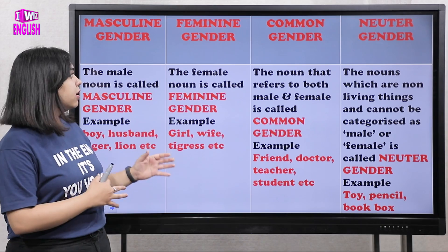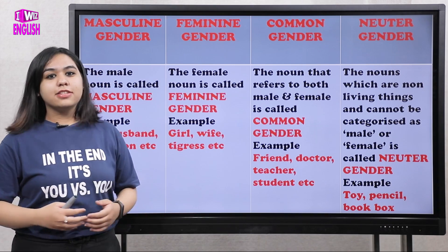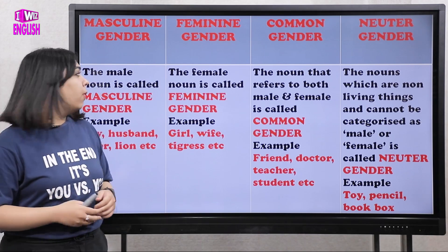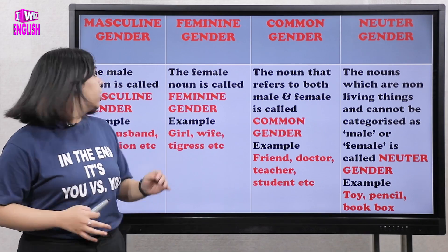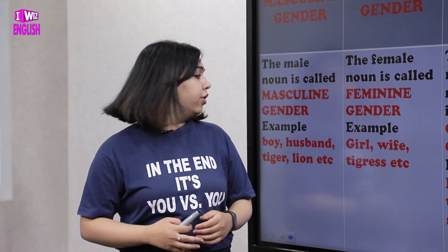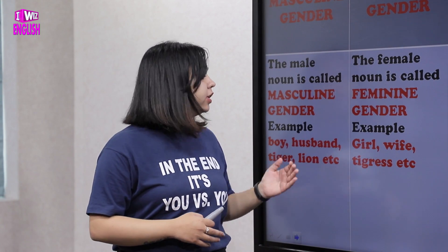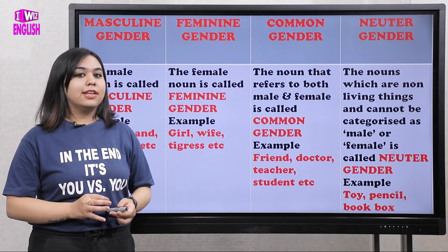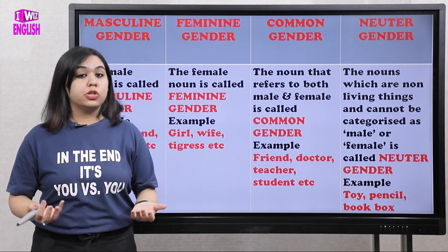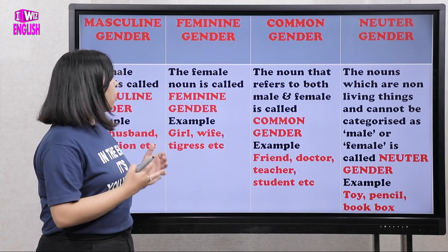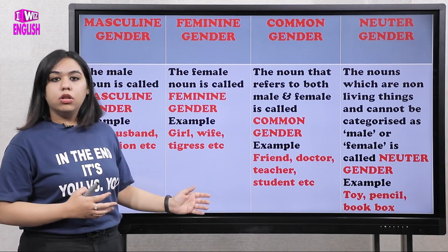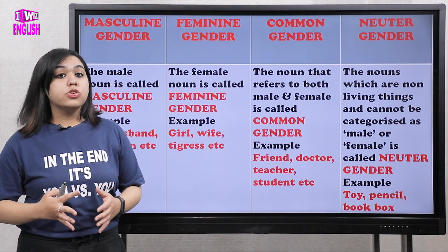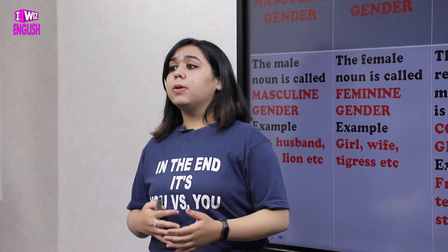Here is a helpful table. Masculine gender refers to the male noun — for example, boy, husband, tiger, lion. Feminine gender refers to the female noun — for example, girl, wife, tigress, lioness. All male nouns fall under masculine gender, and all female nouns fall under feminine gender.